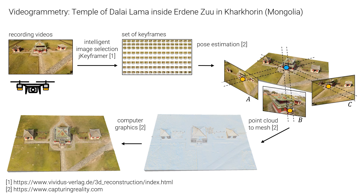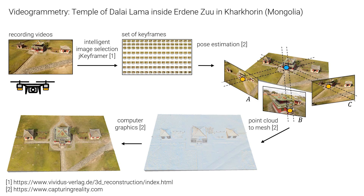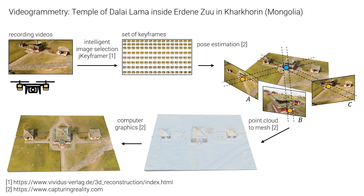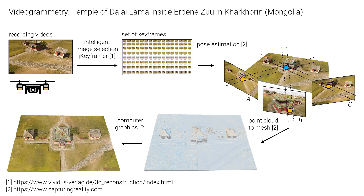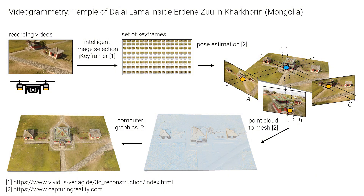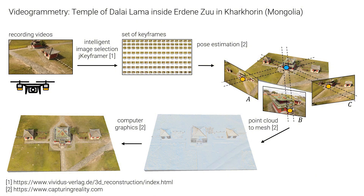We then start the pose estimation, which derives 3D points in space from the 2D features of the images. We can merge the resulting point cloud into a mesh and visualize it texturally using various methods from computer graphics. The Reality Capture program was used for this purpose.